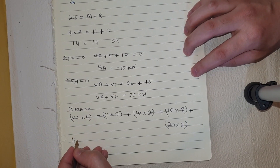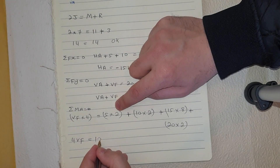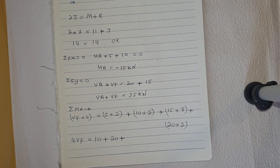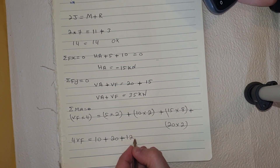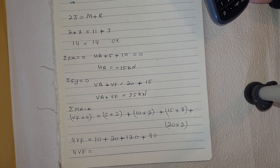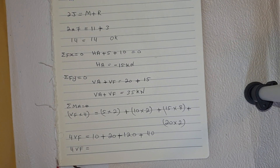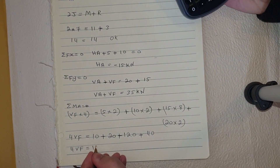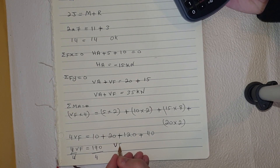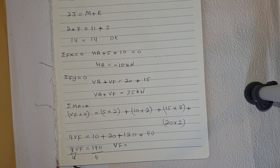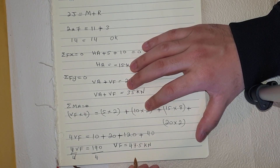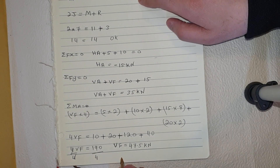So: 4·VF = (5×2) + (10×2) + (15×8) + (20×2) = 10 + 20 + 120 + 40 = 190. Dividing both sides by 4, VF = 190/4 = 47.5 kN.